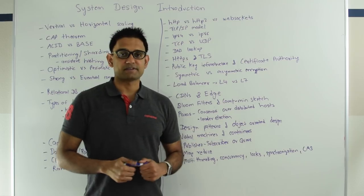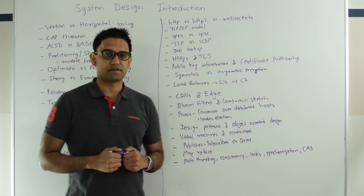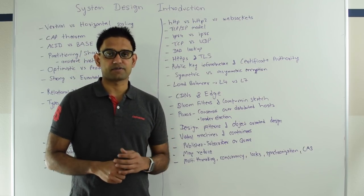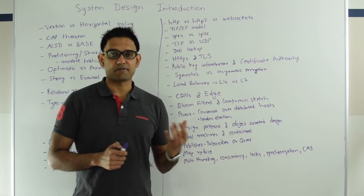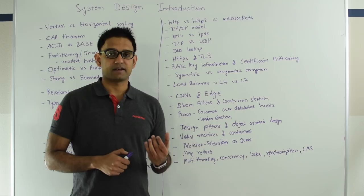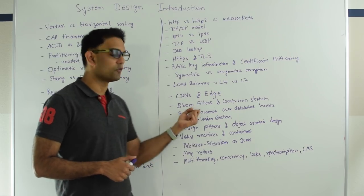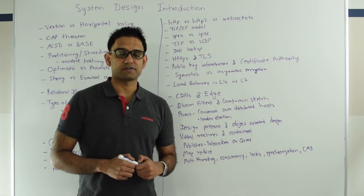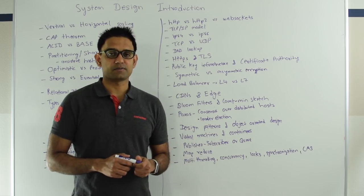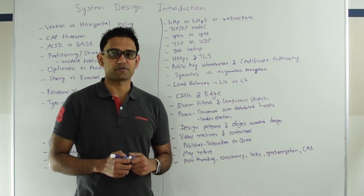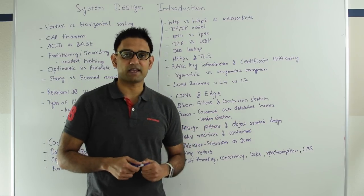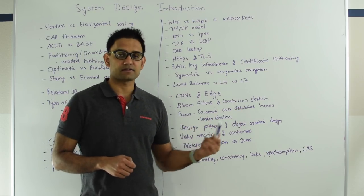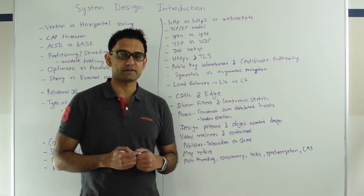Bloom filters and count min sketch are space efficient probabilistic based data structure. Bloom filter is used to decide if an element is a member of set or not. Bloom filter can have false positives but it will never have false negatives. So if your design can tolerate false positives, you should consider using Bloom filter because it's very space efficient. Count min sketch is a similar data structure but it is used to count the frequency of events. Let's suppose you have millions of events and you want to keep the track of top k events. Then you can consider using count min sketch instead of keeping the count of all the events. So for a fraction of space, it will give you an answer which will be close enough to the actual answer with some error rate.